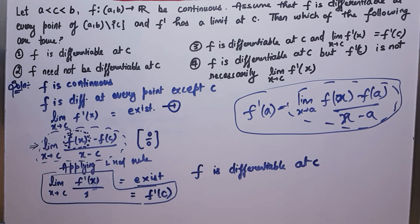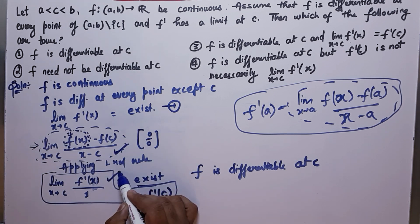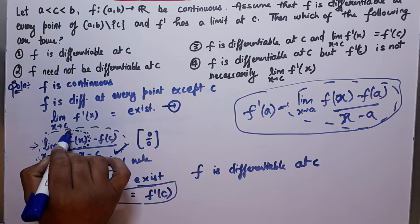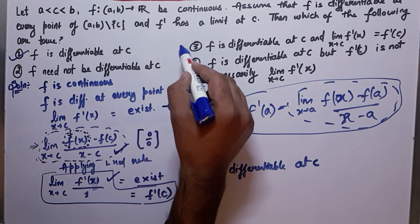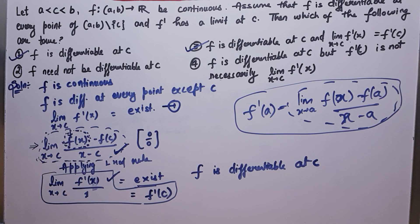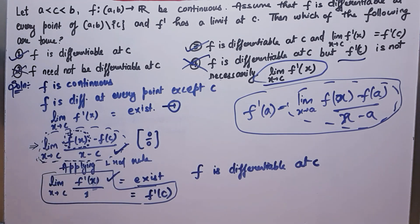So I am done with this question. This is a very easy question, totally dependent on the step of recognizing that the function is differentiable so you can differentiate. Option 1 says F is differentiable at C — this is correct. Option 2 says F is differentiable at C and the limit of F dash X at C equals F dash C — this is also correct. Option 3 says F need not be differentiable — incorrect. Option 4 says F is differentiable at C but F dash C is not necessarily the limit of F dash X — incorrect, because of the uniqueness of the limit. Thank you.